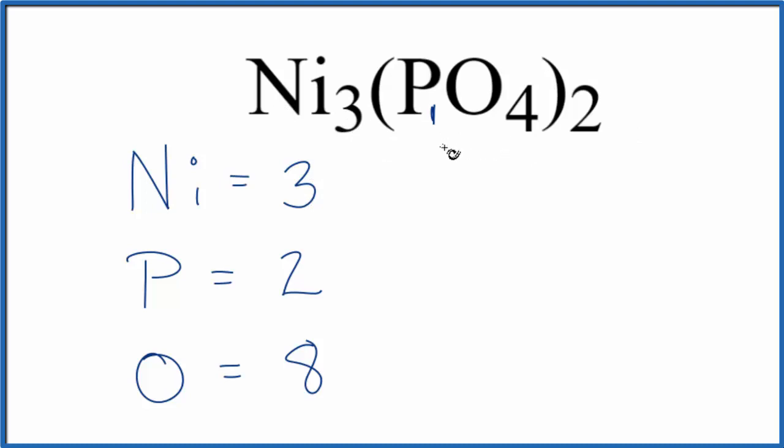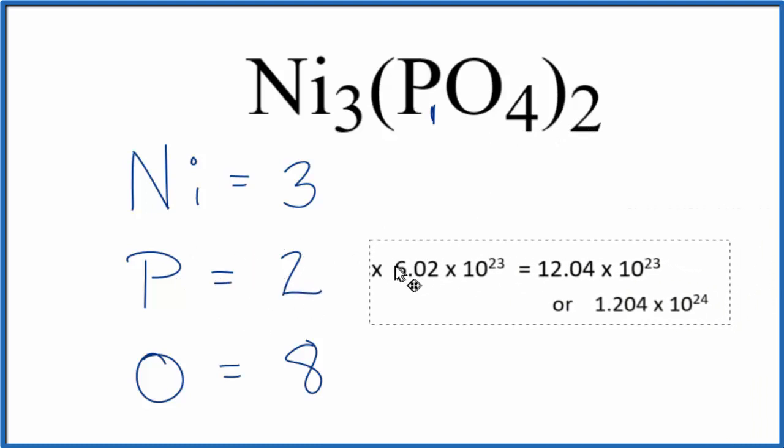Sometimes you're asked to find the number of atoms for, say, like phosphorus in 1 mole of Ni3(PO4)2. If you're asked to do that, you just multiply the number of phosphorus atoms by Avogadro's number. So 2 times Avogadro's number.